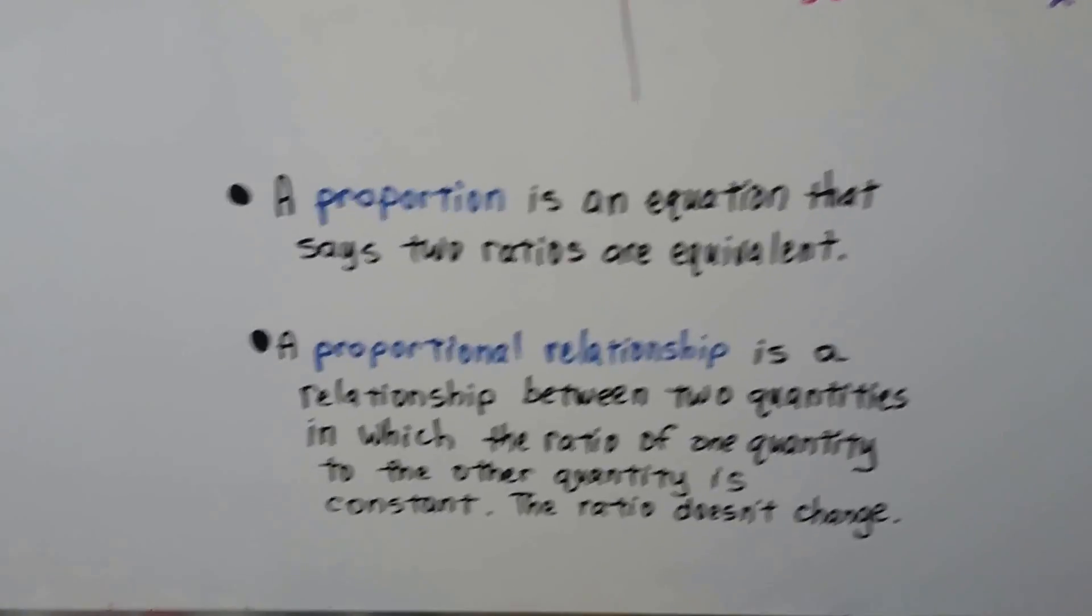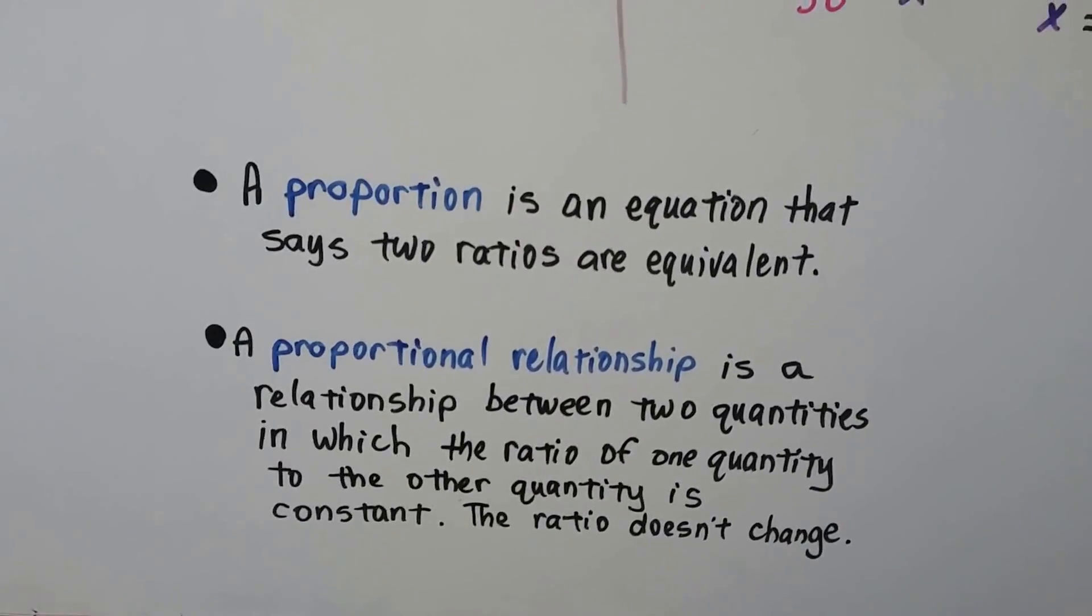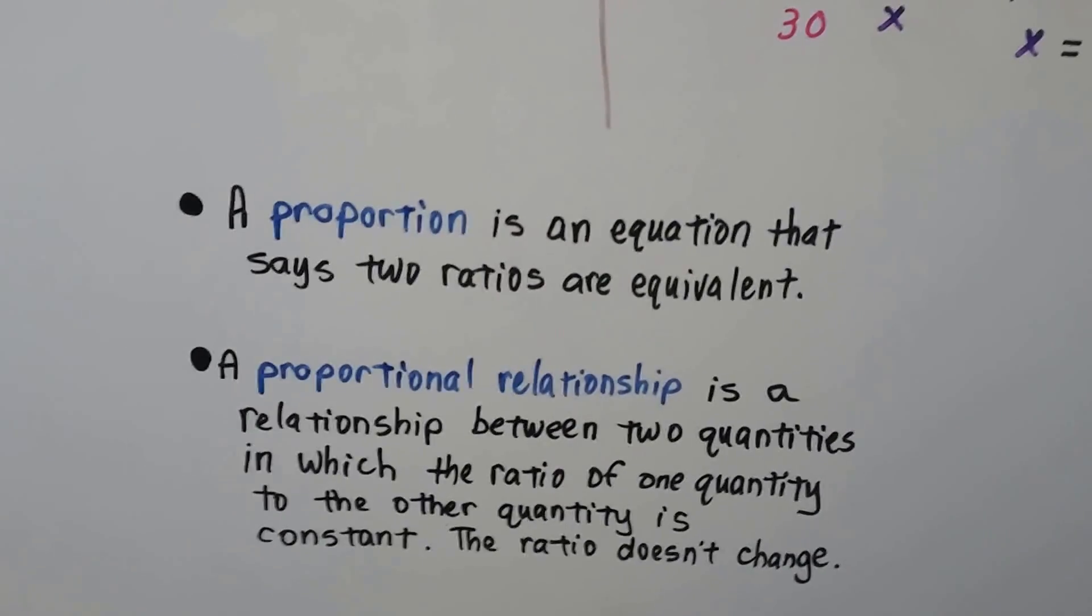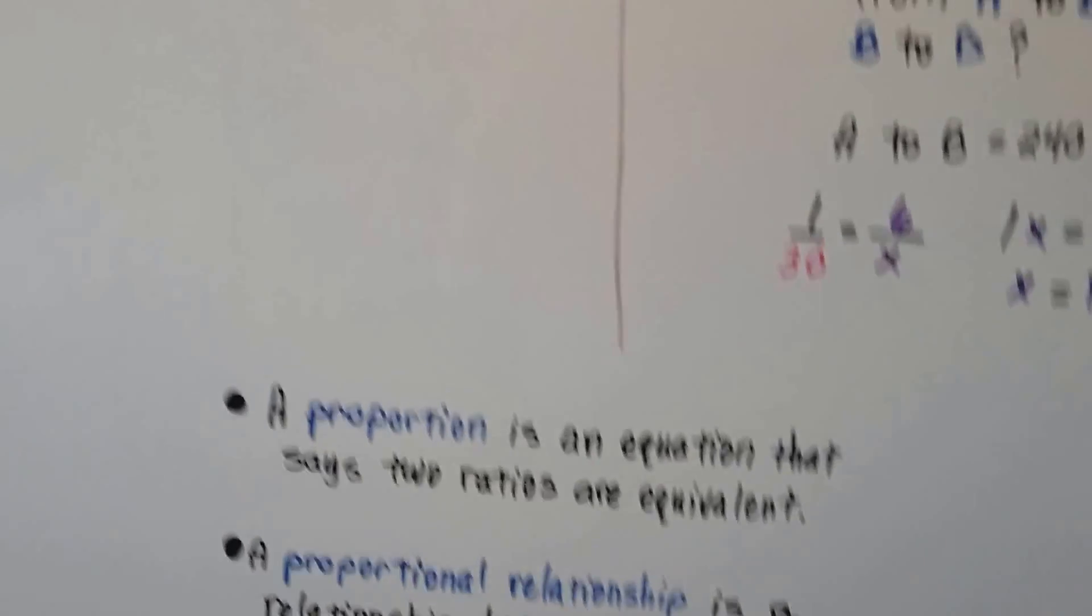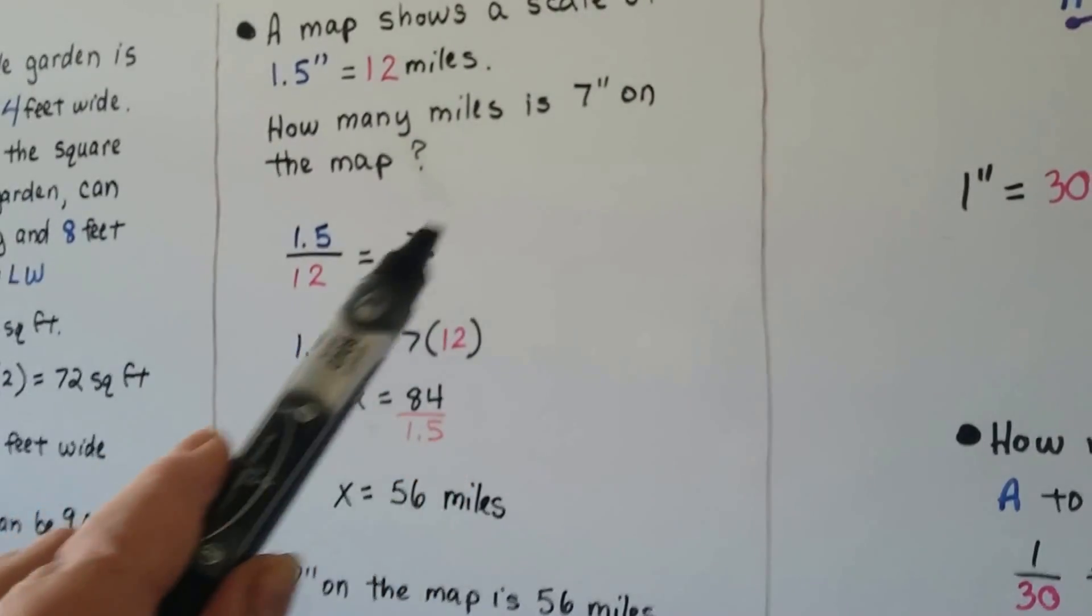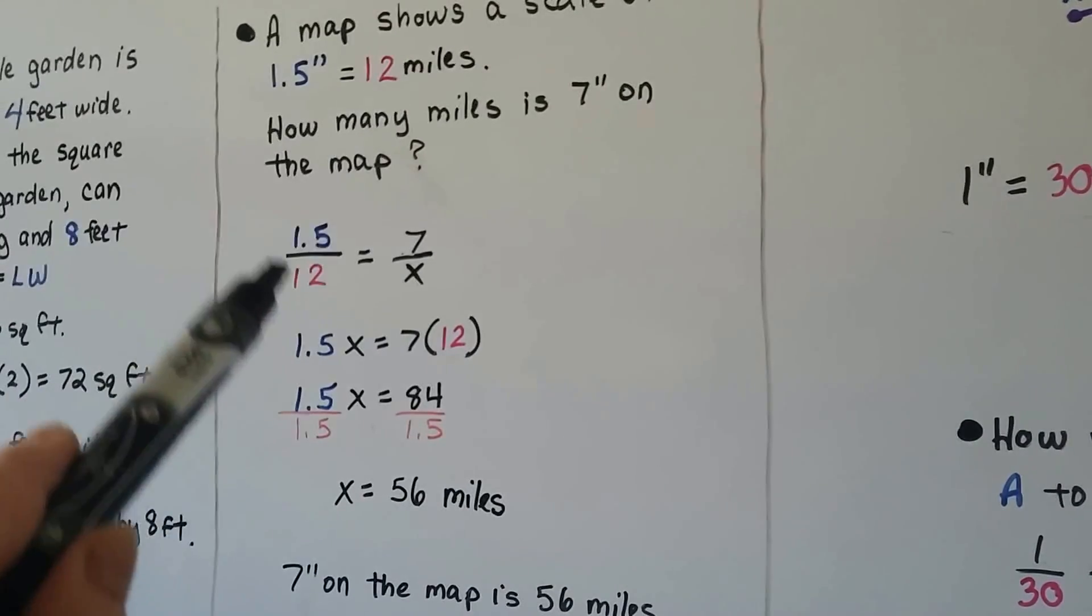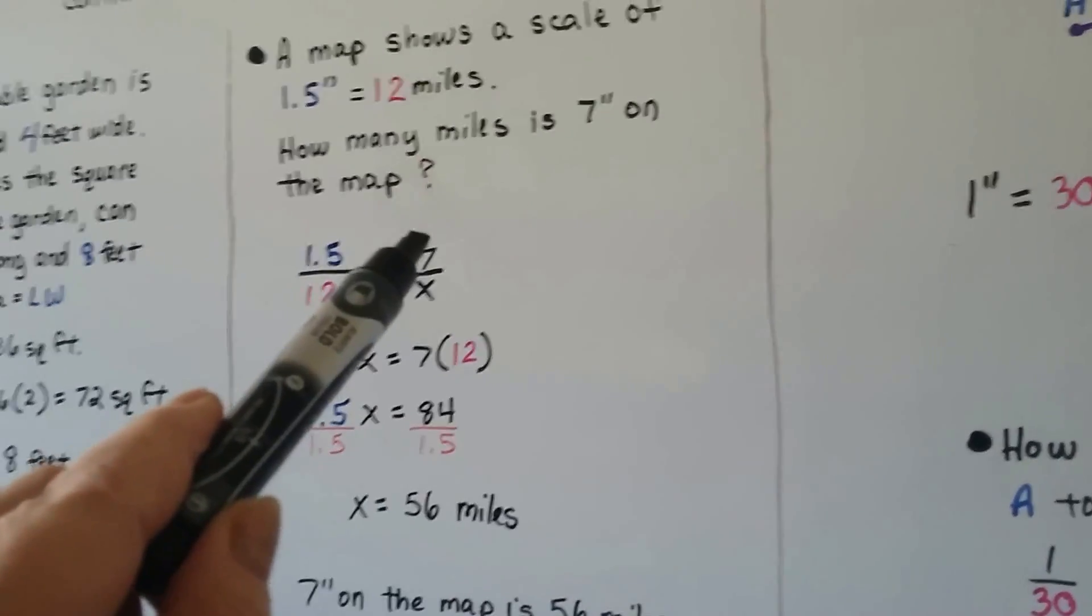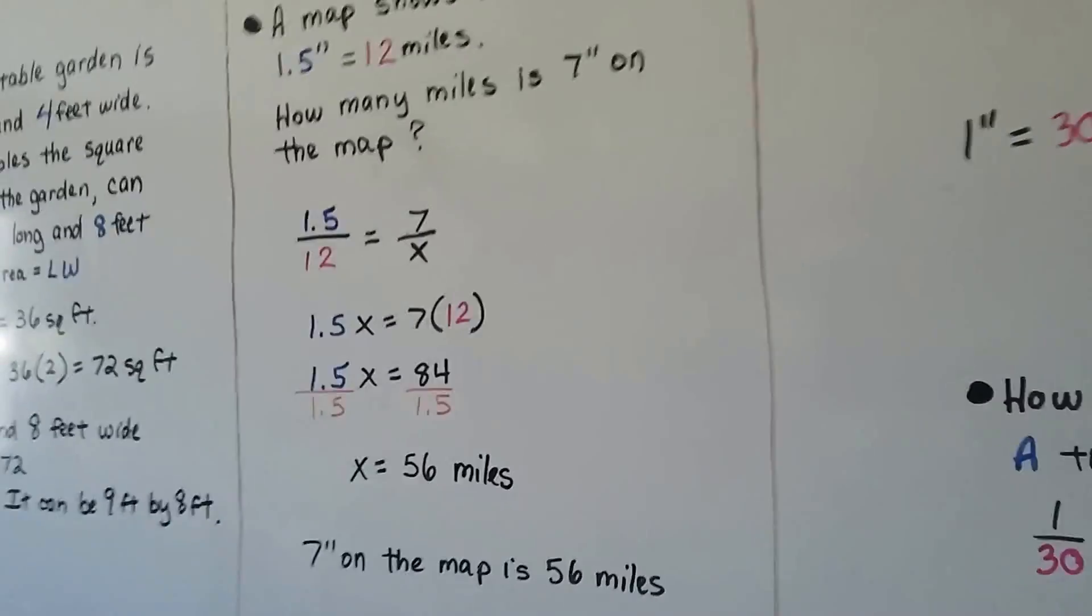So, proportion is an equation that says two ratios are equivalent. And, a proportional relationship, well, that's a relationship between two quantities, like one inch equals six miles. In which the ratio of one quantity to the other quantity is constant. The ratio doesn't change. So, in this one, it didn't matter if we used seven inches, four inches, five inches, twenty-seven inches. This would still be the same. So, we could plug any number in here, other than seven, and then find the mileage. This is going to be constant. That proportion.